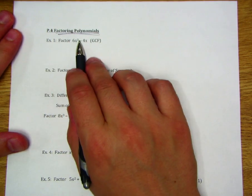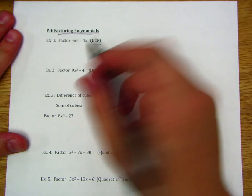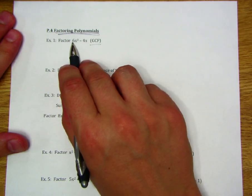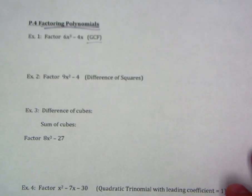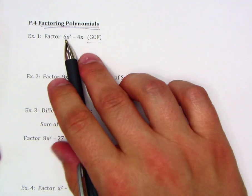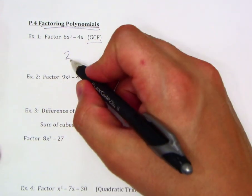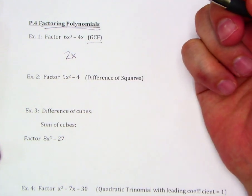Example one: factor 6x³ - 4x. We're talking about the GCF here. So what do these have in common? Let's start off by looking at their coefficients. The coefficients of each term happen to be even, so I could factor a 2 out. That's really it, because 6 is 2 times 3, whereas 4 is 2 times 2. In addition to that, I could factor one of these x terms out, so that is my GCF.